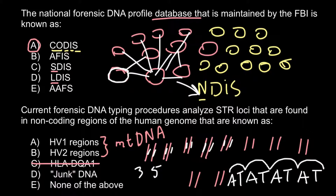The correct answer is D: junk DNA. Scientists found certain variable fragments on specific chromosomes, and those variable fragments are surrounded by stable DNA — DNA that is the same in every person. So no matter whether the chromosome is derived from the father's or mother's side, the variable DNA inside is flanked by stable DNA. This means we can design primers targeting those stable flanking regions, and both primers will work for chromosomes from either the father's or mother's side.